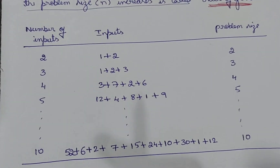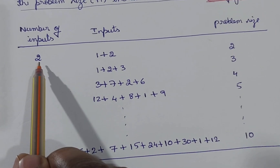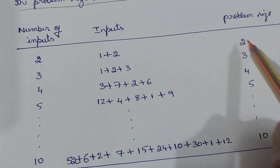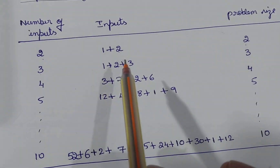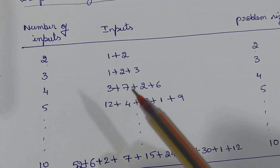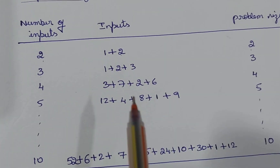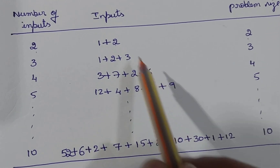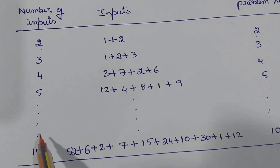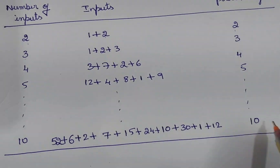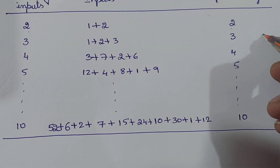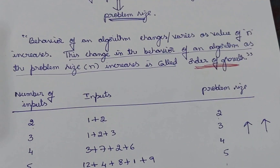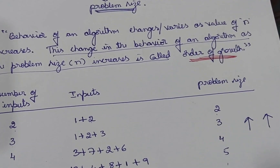Let us see with an example. Assume we have written a program to do addition. If we give 2 inputs, say 1 and 2, it will give results in very little time — the problem size is 2. If we give 3 inputs like 1 plus 2 plus 3, it does not take too much time. With 4 or 5 inputs, it takes more time compared to problem size 2. With 10 inputs, it takes even more time. So as the problem size keeps increasing, the time taken by the algorithm also increases. This change in the behavior of an algorithm when the problem size increases is called order of growth.